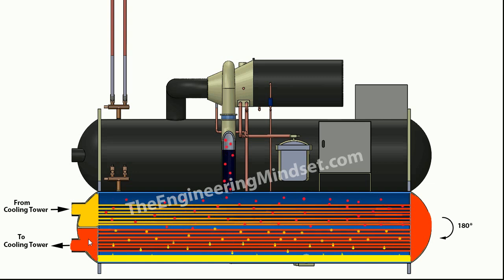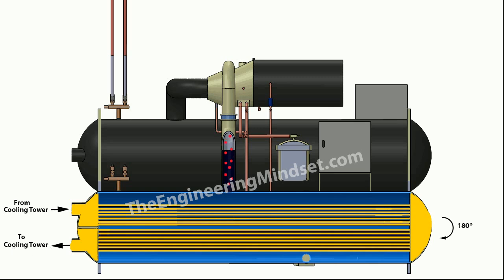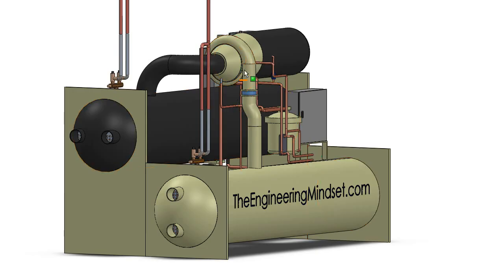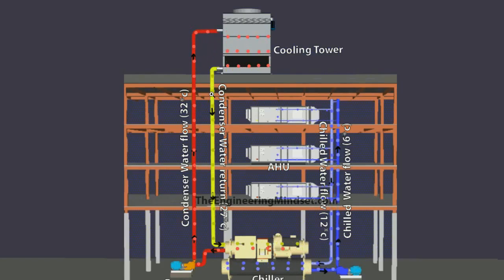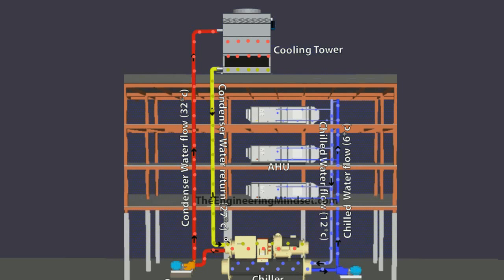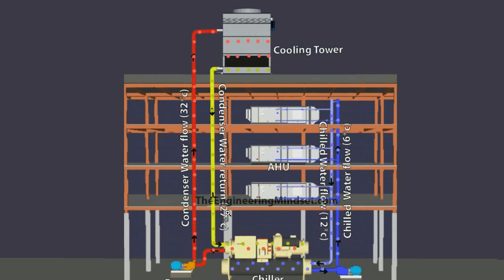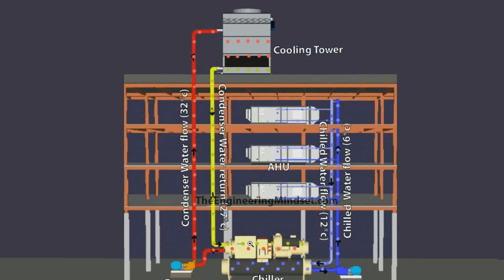Meanwhile, the hot condenser water heads off to the cooling tower. When the refrigerant exits the compressor and heads down towards the condenser through the discharge line, it needs to be at a much higher temperature than the return water coming back from the cooling tower — at 27 degrees Celsius or 81 degrees Fahrenheit. If the refrigerant coming out of the compressor is the same temperature as the return condenser water, your chiller will not be able to reject any heat from the building, and you will not be able to cool the building down.